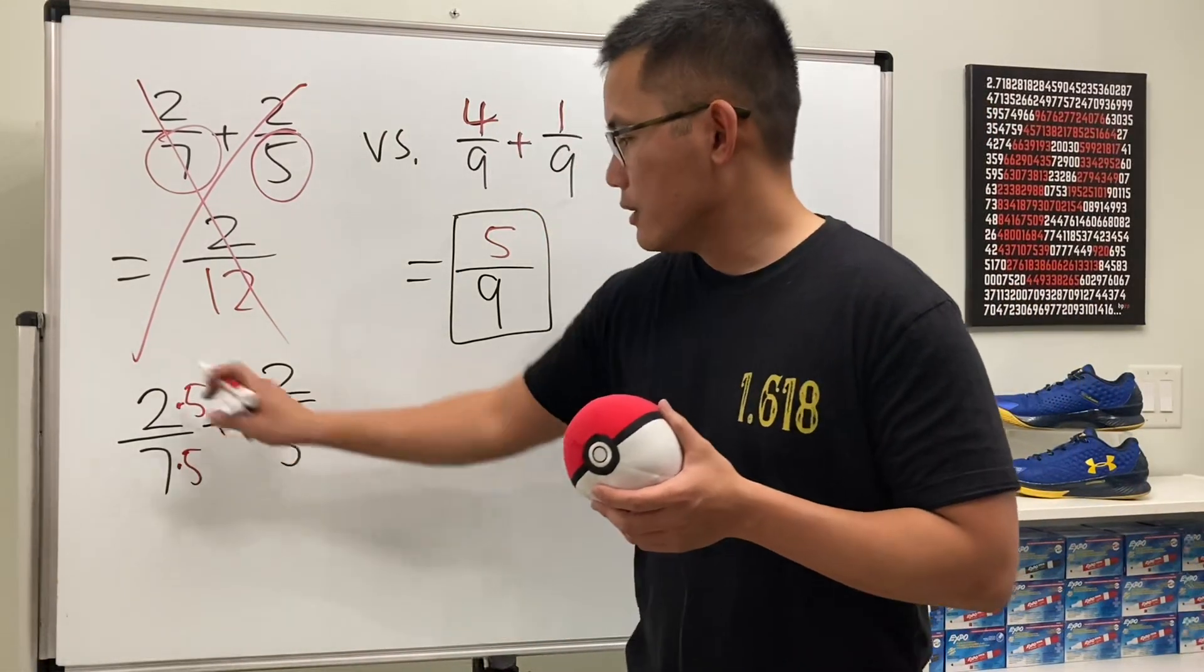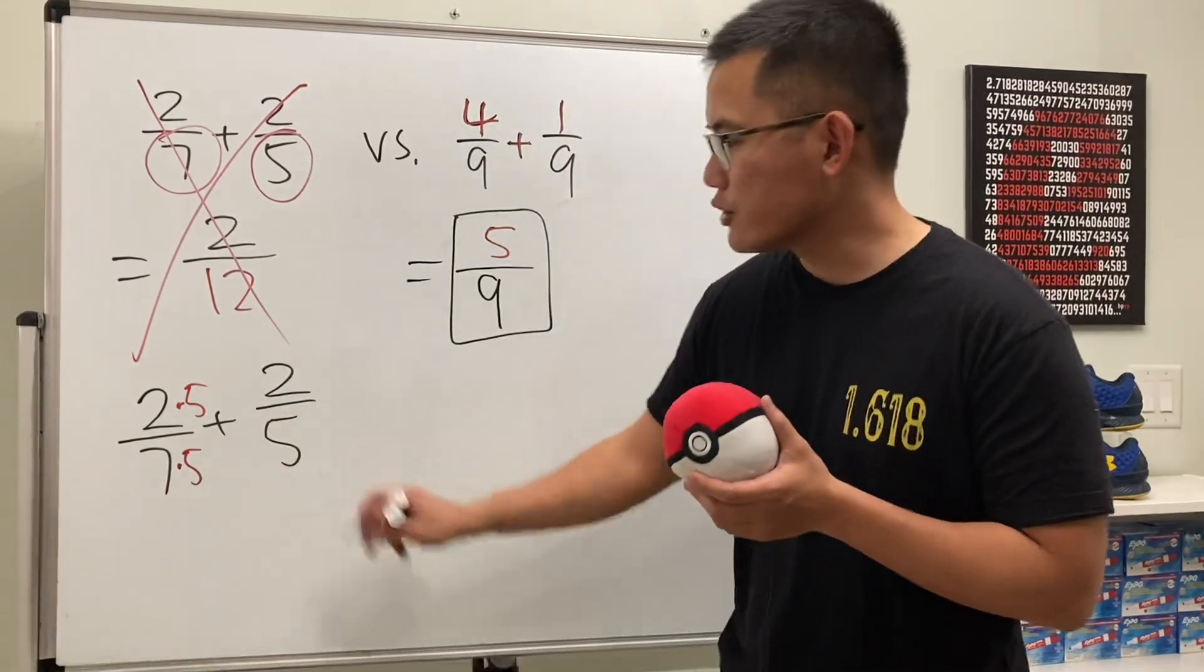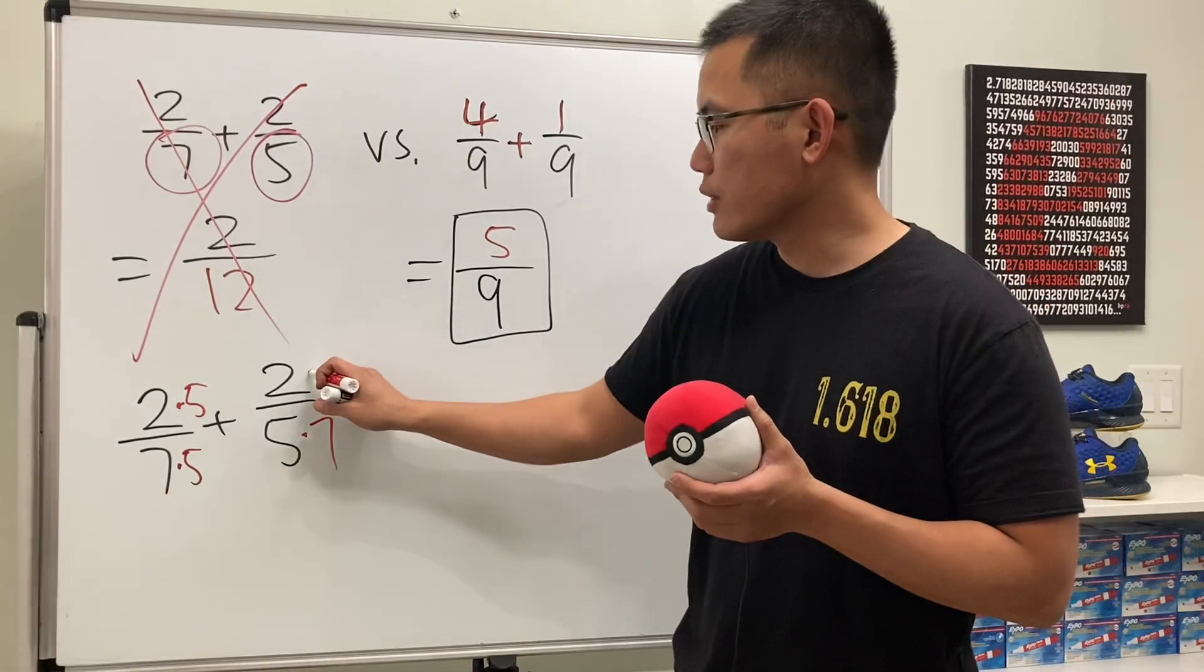What we do is we can multiply the top and bottom by 5 for the first fraction, so you see we have 7 times 5. And for the second fraction we can just do 5 times 7 so that they have the same denominator. But don't forget to do the same thing on the top.